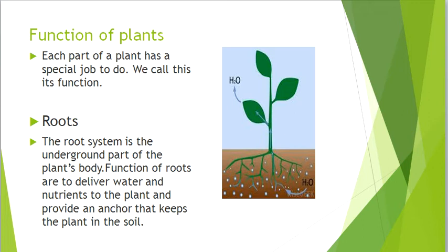The root system is the underground part of the plant's body. The function of roots is to deliver water and nutrients to the plant and provide an anchor that keeps the plant in the soil.